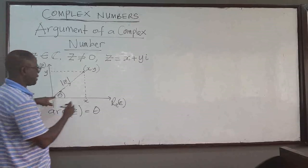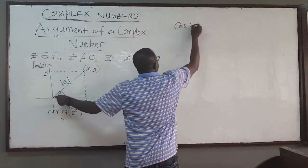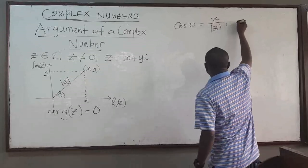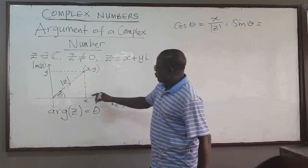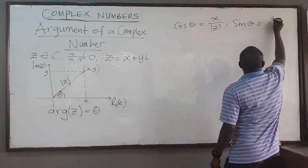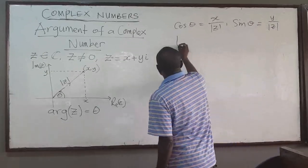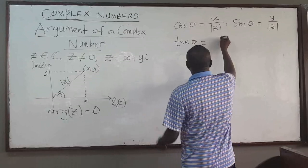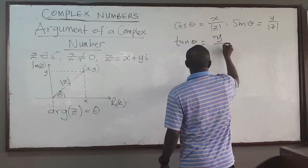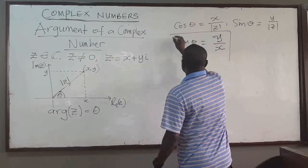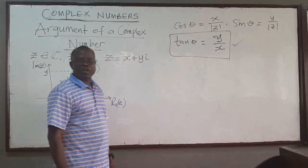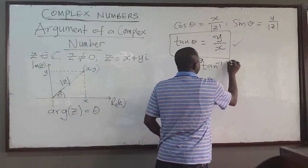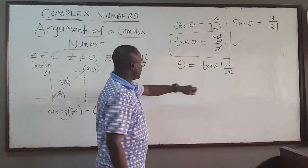We can apply some techniques from trigonometry here. We can find the cosine of theta: cos(theta) equals adjacent over hypotenuse, which is x over |z|. The sine of theta equals opposite over hypotenuse, which is y over |z|. And tan(theta) equals opposite over adjacent, which is y over x. This is important and is often used to find the argument of the complex number, because from here you can find theta, which is equal to the arctan of y over x.